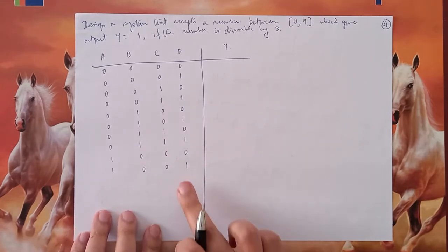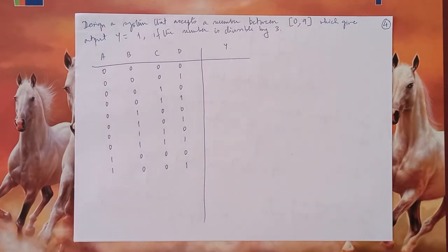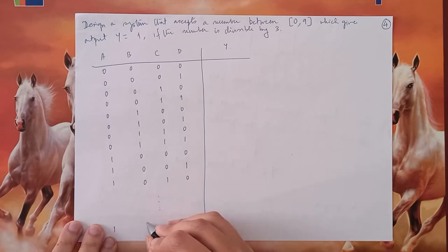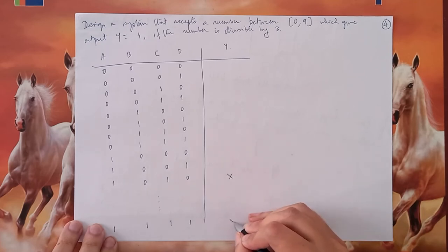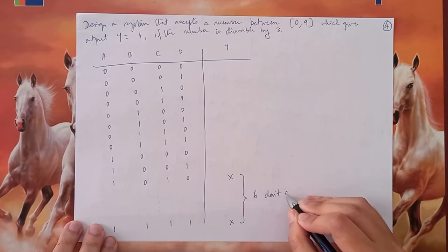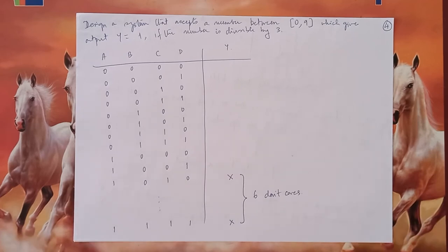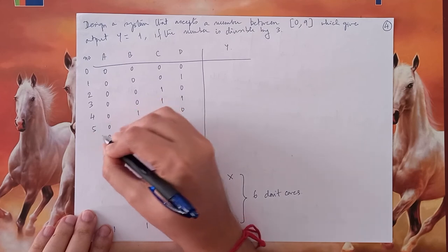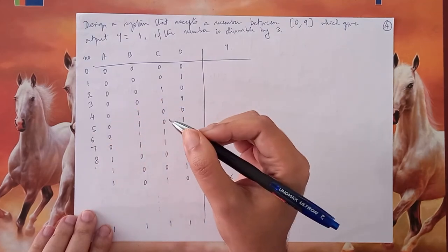Notice I am not writing any more entries in the truth table beyond row 9. Why? Because the range of numbers which my system can accept should be from 0 to 9. You may question: what will happen to those inputs after 9, that is 10 to 15? Because you can also have inputs from 10 onwards to 15, that is 1010 to 1111. Those will be assigned as don't cares — there will be a total of 6 don't cares for 10, 11, 12, 13, 14, and 15.